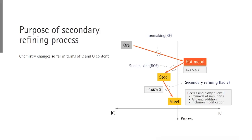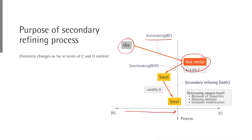Let's look at the purpose of the secondary refining process. The figure on the right-hand side shows the chemistry of steel depending on its process stage. The vertical axis shows the progress of the process, and the horizontal axis shows the chemical composition experienced so far. Starting from iron ore, which contains lots of oxygen — for example, Fe₂O₃ contains about 30 weight percent oxygen. After iron making, it is transformed into hot metal, and its oxygen content decreases significantly, with almost no oxygen remaining.